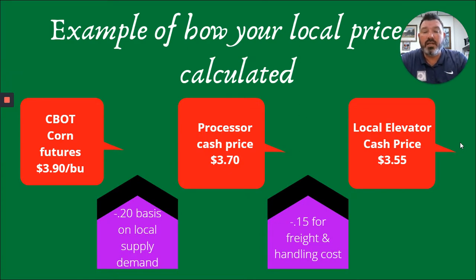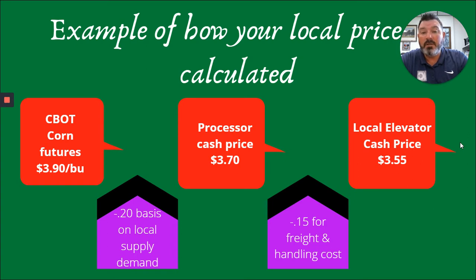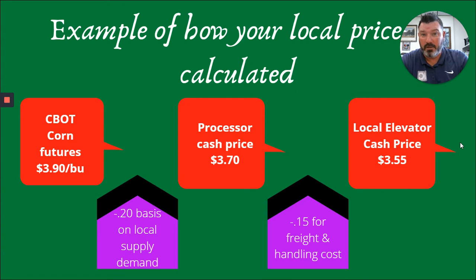Here's a flowchart example of how your local price might be calculated. Start with the Chicago Board of Trade corn futures trading at $3.90 a bushel. We take maybe a $0.20 deduction in basis on local supply and demand — for example, here in southern Illinois where we expect a fairly sizable corn crop — so a processor cash price might be $3.70. If we subtract another $0.15 for freight and handling costs, that gets you to an established local elevator bid of $3.55.